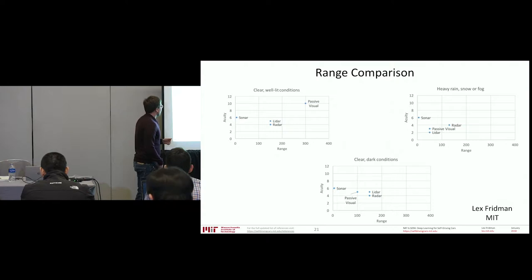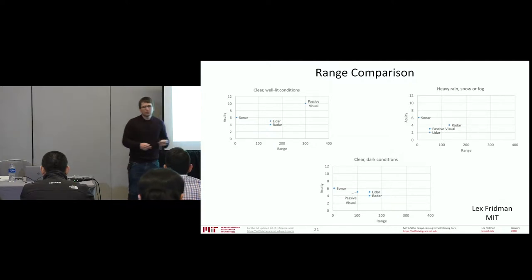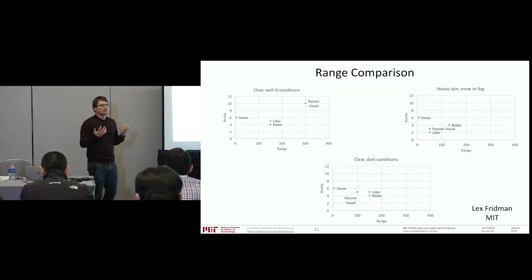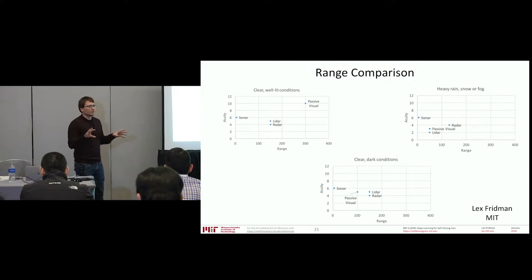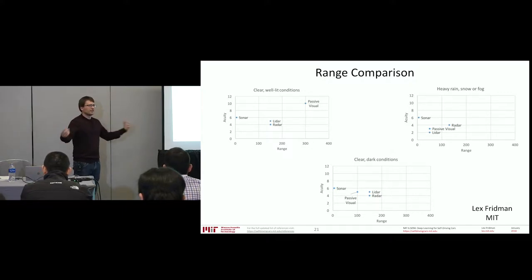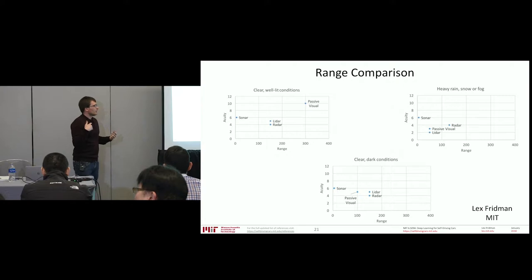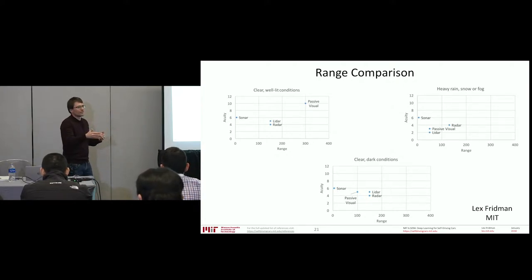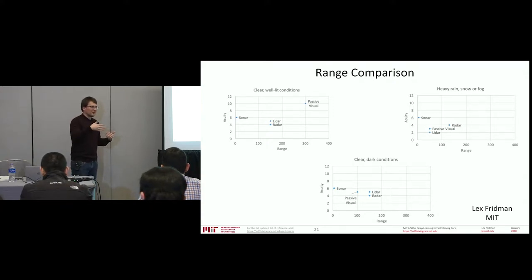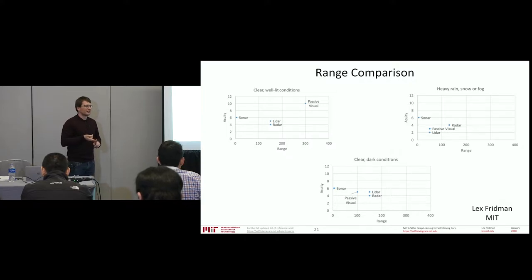In dark conditions, sonar doesn't care, LiDAR doesn't care, but cameras struggle a lot more. The key distinction is active versus passive sensors: the only passive sensor here is the camera, just absorbing light the environment provides. Sonar, radar, and LiDAR are all active sensors that emit something and evaluate what comes back. It's not surprising that a passive sensor on a clear day tends to have the best range — an active sensor can only get back as much signal as it sends out, bounded by not burning your eyes out and not needing a nuclear power plant on board.